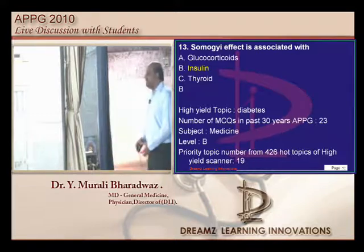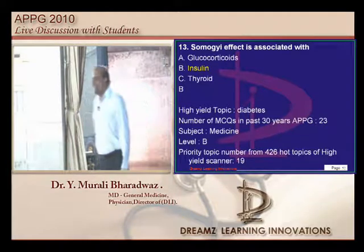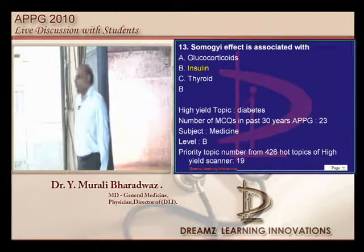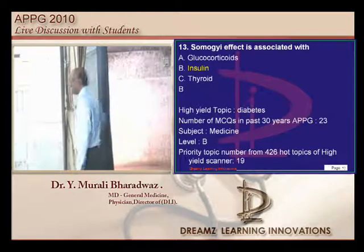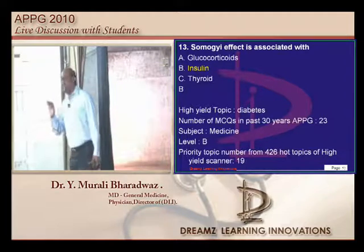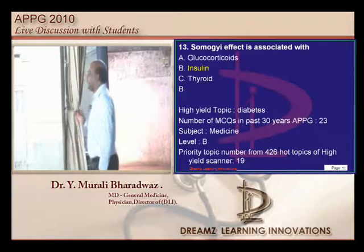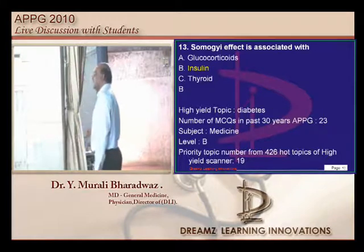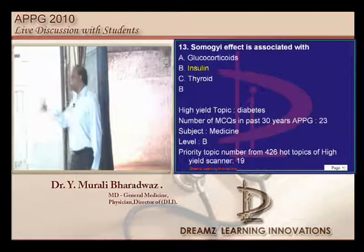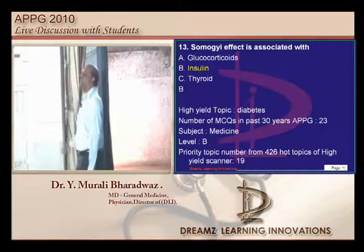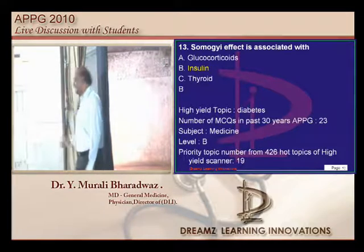What is the Somogyi effect and dawn phenomenon? How many of you want to become endocrinologists? Endocrinology and neurology are evergreen branches among DM super specializations — you can really relish working in them.